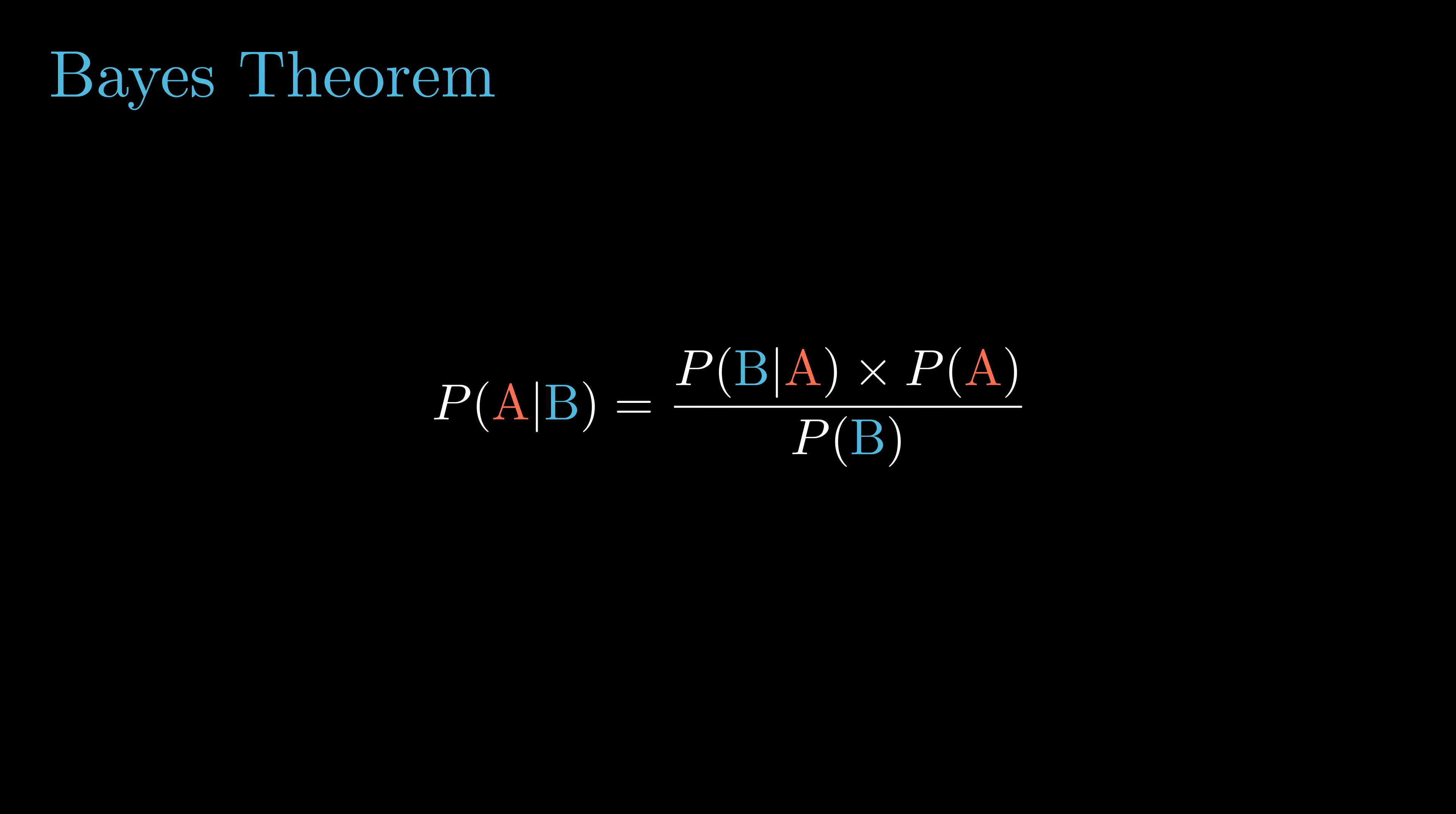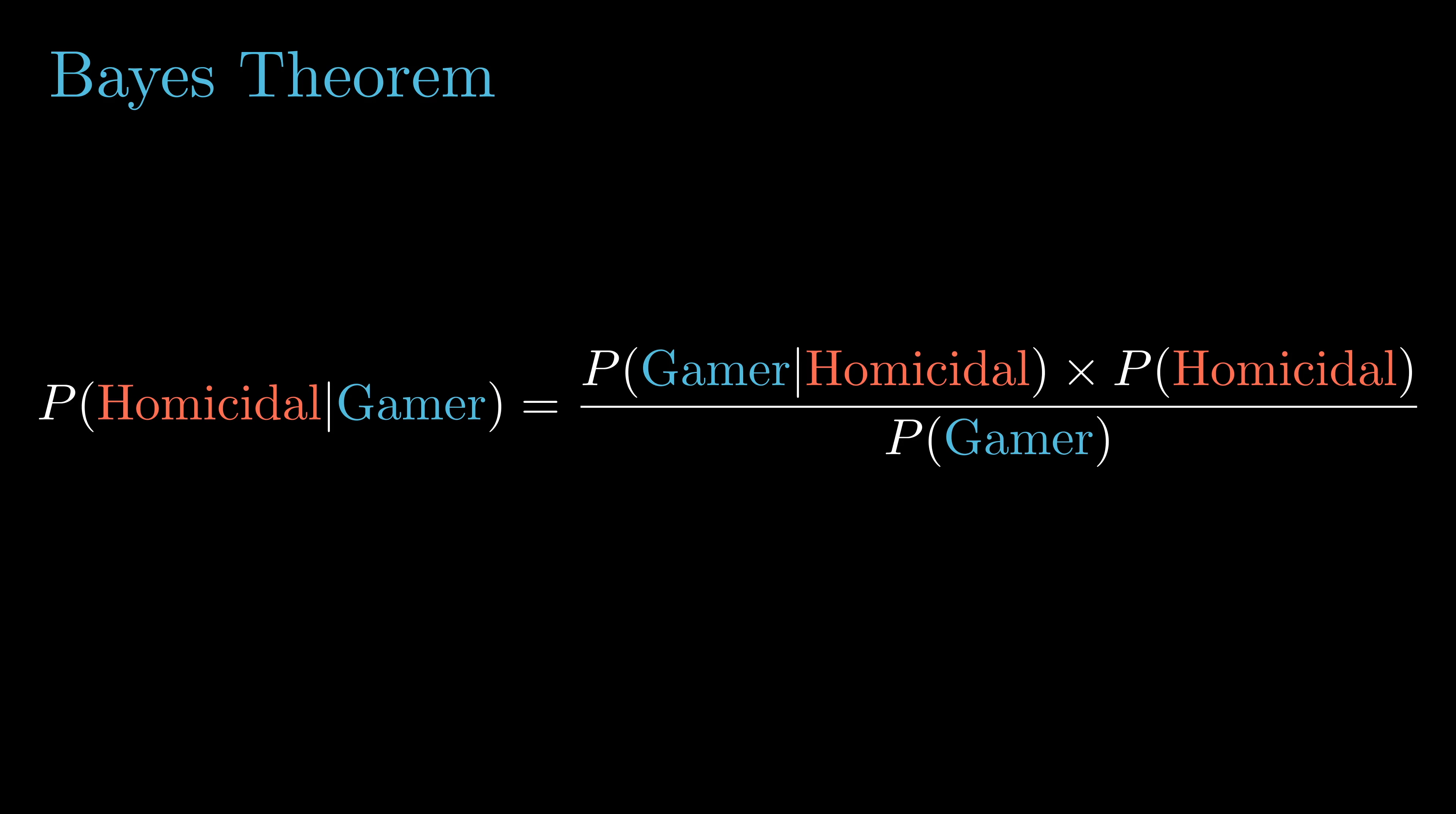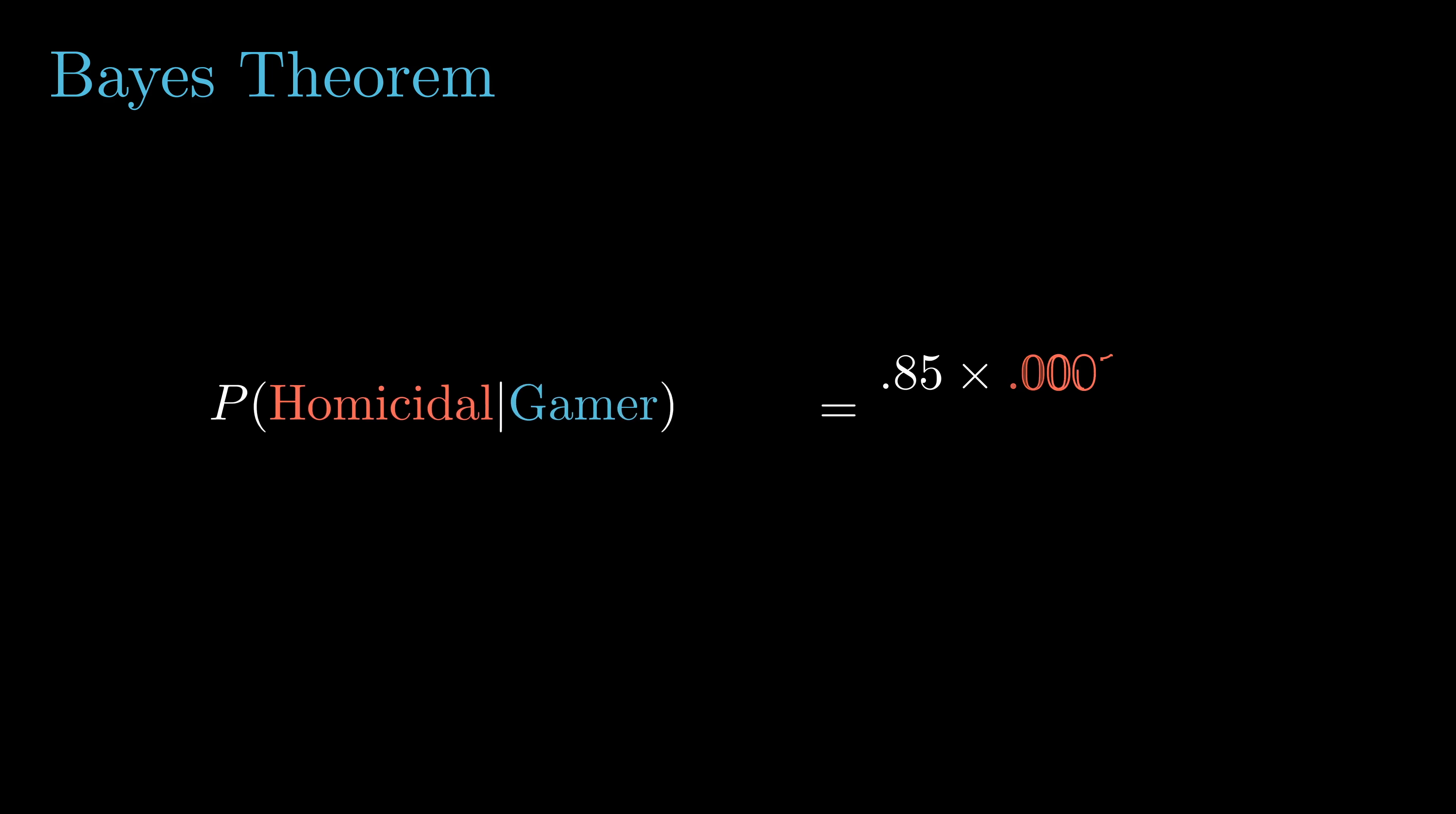We plug in those three values into Bayes' theorem in the formulation, and we will find that this evaluates to 0.0004. So a 0.04% likelihood that you are homicidal given you're a gamer.